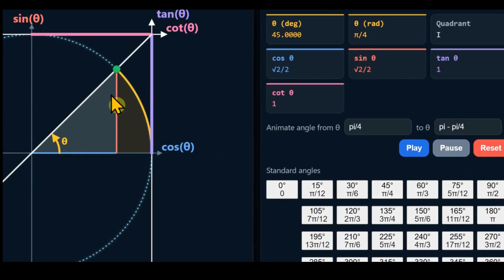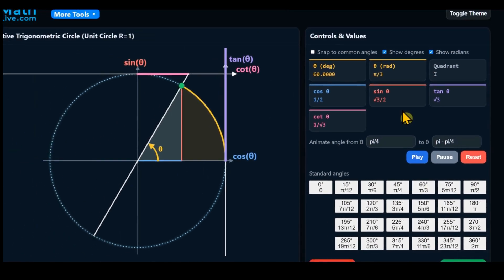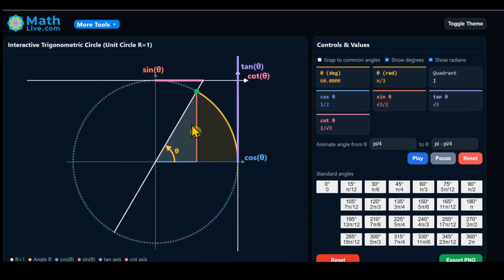At sixty degrees or pi over three, the sine is square root of three over two. At ninety degrees or pi over two, the sine equals one.